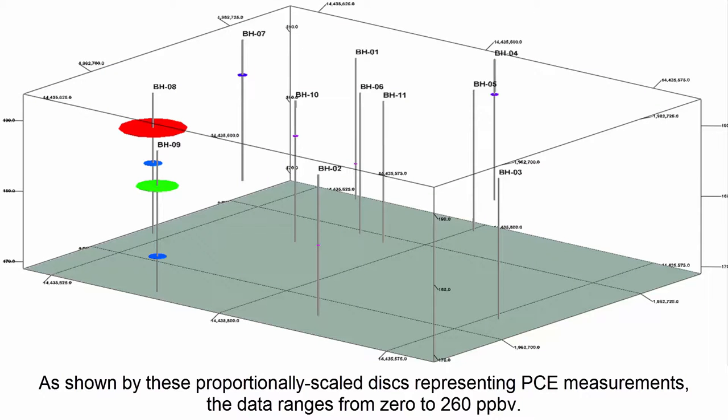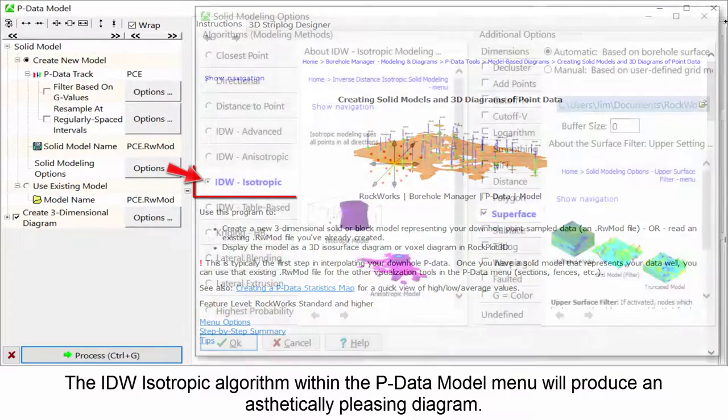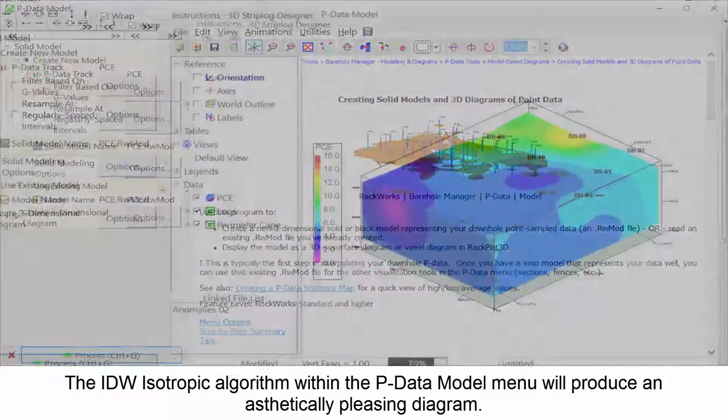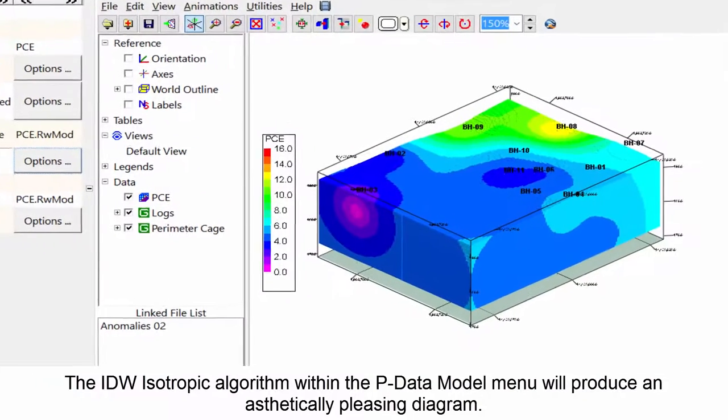the data ranges from 0 to 260 ppbV. The IDW isotropic algorithm within the P-Data model menu will produce an aesthetically pleasing diagram.